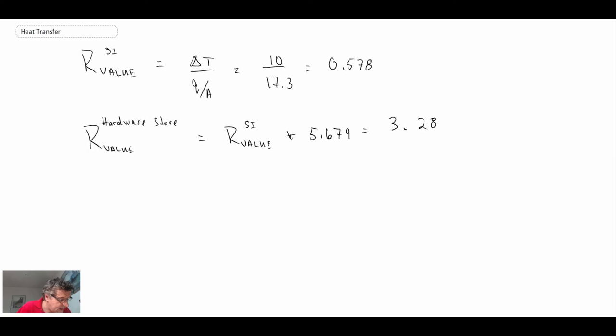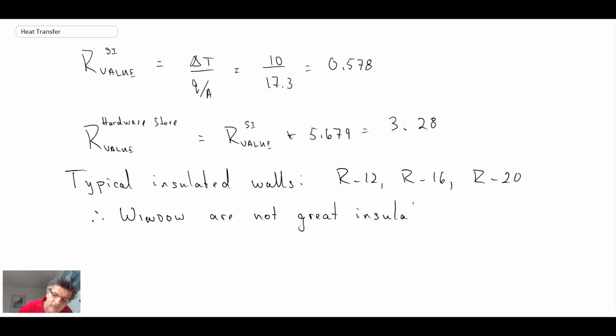Because typically, typical walls, if you have an insulated wall, you could have R12, R16, R20, and here we have R3.28. And so therefore, windows, and no real surprise here, windows are not great insulators.